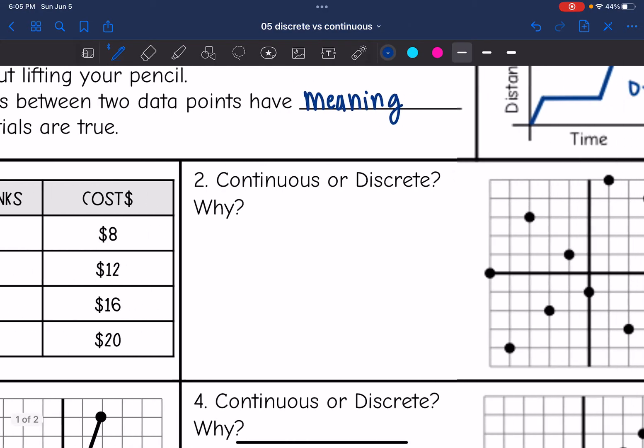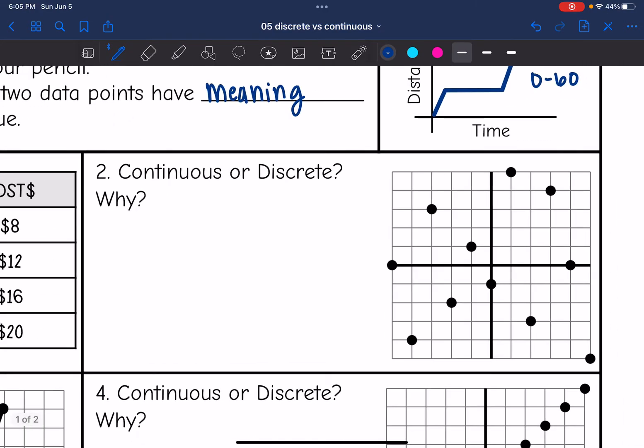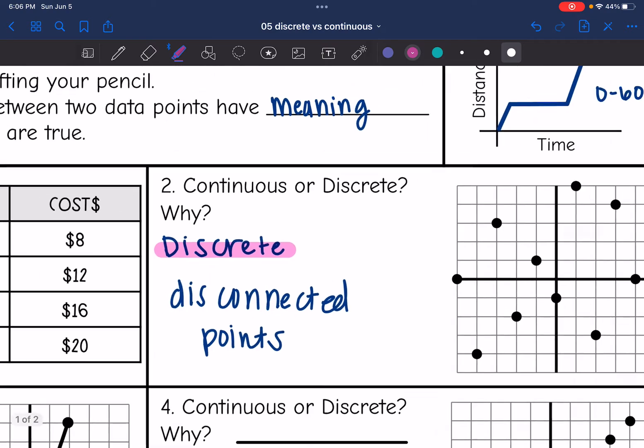All right, let's look at this next one. I have a disconnected graph. So this is definitely discrete because the data is disconnected. So anytime you have a graph that is disconnected like this, it's going to be discrete.